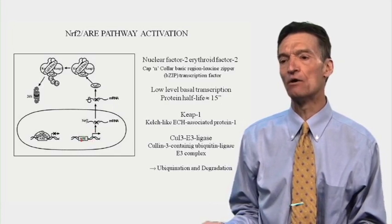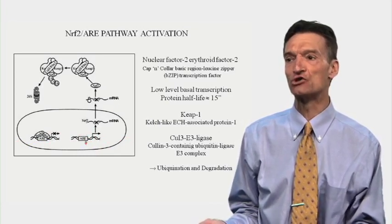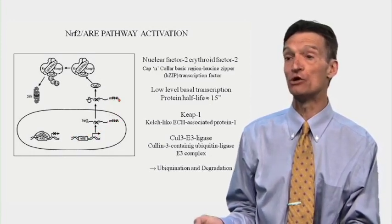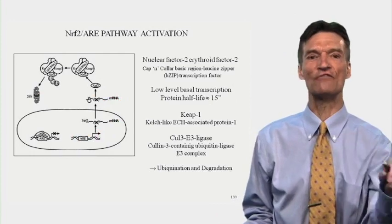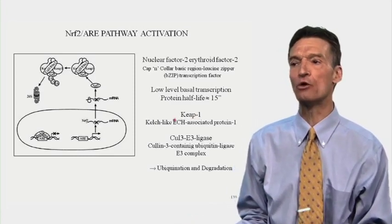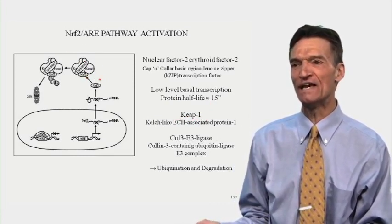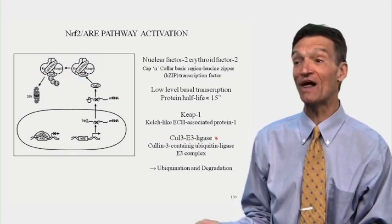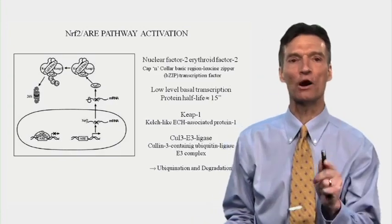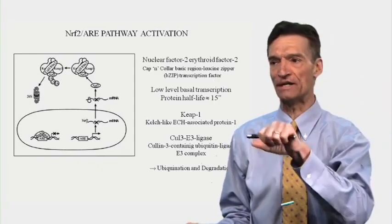Nrf2 mRNA is transcribed, enters the cell fluid, and is translated into Nrf2 protein. We're constantly making this at a low level, but it exists in the cell fluid only for about 15 minutes because it will be bound to a molecule called KEAP1. When KEAP1 sequesters Nrf2, it associates it with Cul3-E3 ligase, which adds a ubiquitin molecule. When we add a ubiquitin molecule to a protein in our cells, that marks it for destruction. So we're constantly making Nrf2, but we're instantly tying it up and destroying it.